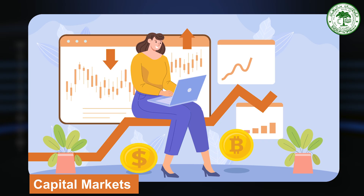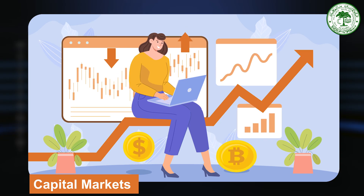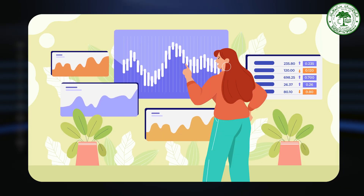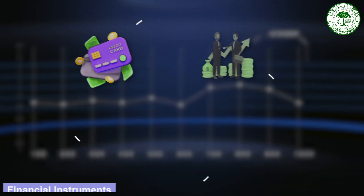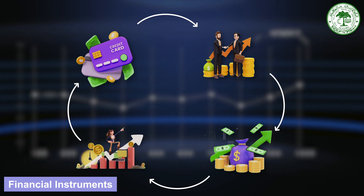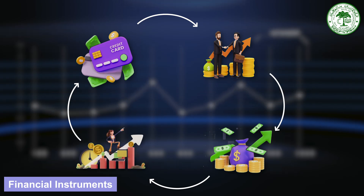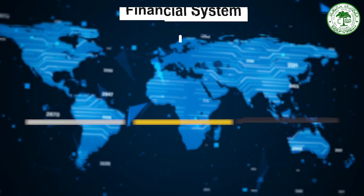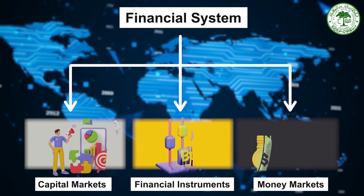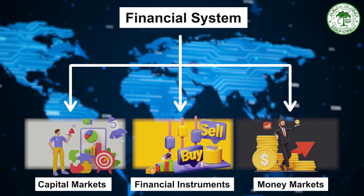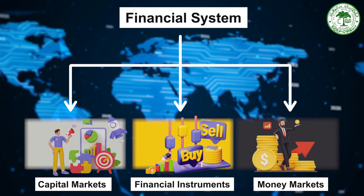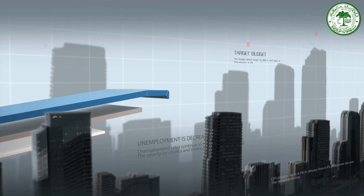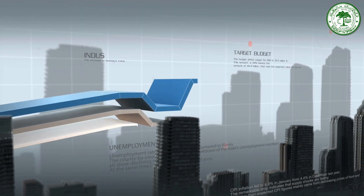From capital markets that drive investment to money markets that ensure liquidity, financial instruments and institutions that facilitate optimal and efficient allocation of resources are the components of the financial system — the backbone of modern economies, becoming more complex and layered every passing day.